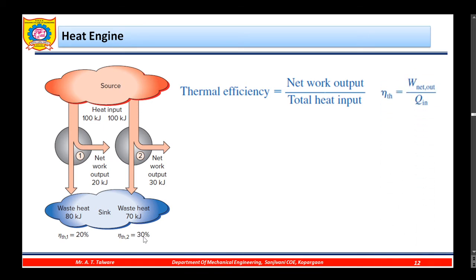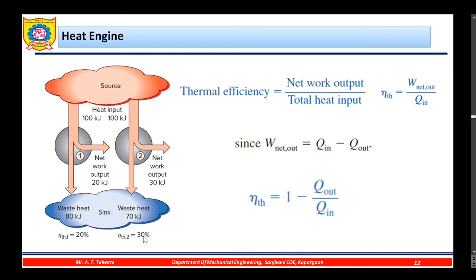Thermal efficiency equals W_net output divided by Q_in. Since W_net equals Q_in minus Q_out for a cyclic process, we can substitute and finally get the expression: thermal efficiency equals 1 minus Q_out divided by Q_in.